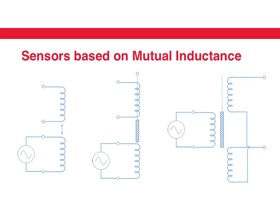We can make different sensors based on mutual inductance. Here is one sensor where the principle is that the secondary coil comes close to the primary coil — if it comes closer, more of the magnetic field goes through it and more voltage is induced across the second coil. Here is another example where instead of bringing the coil closer, we use a ferrite core to change the amount of magnetic field that is coupled between the first and the second coils.